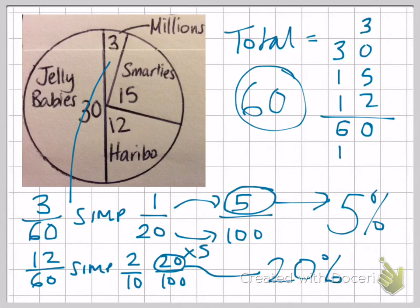Sometimes there are sectors that are really easy to work out, and you don't actually have to do complicated conversions like this. For example, if you look at the Jelly Babies, that is clearly one-half of the pie chart, so one-half would be 50%.